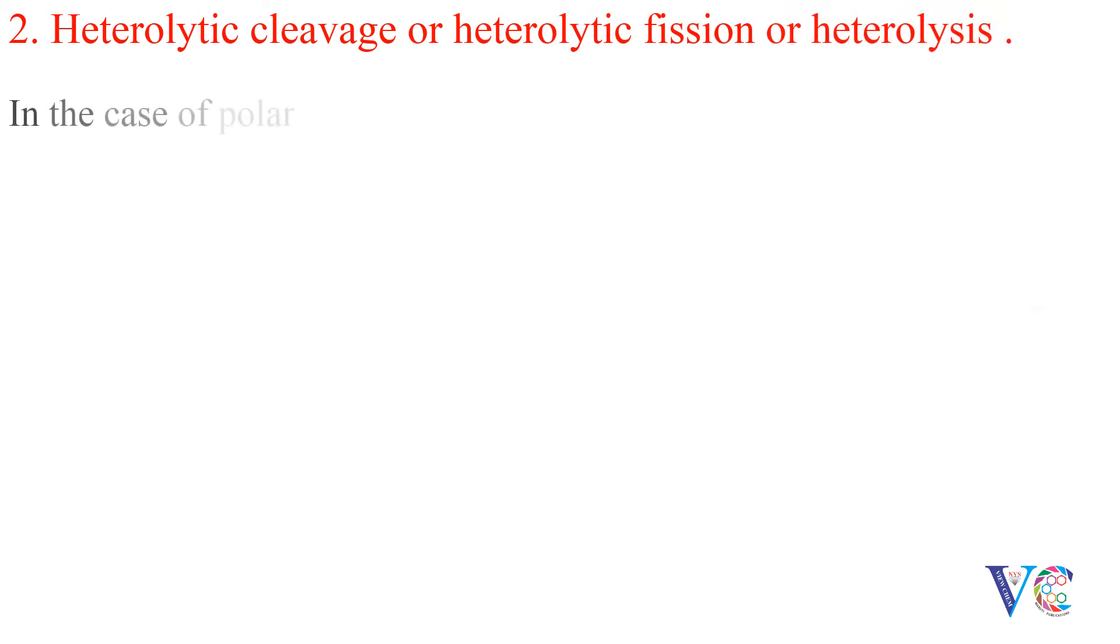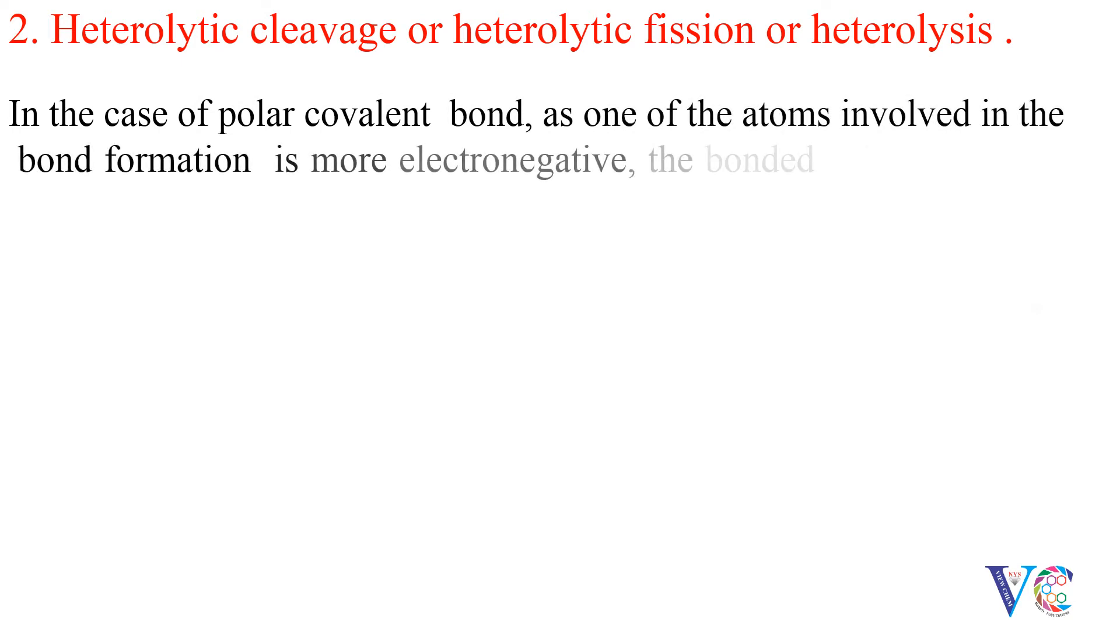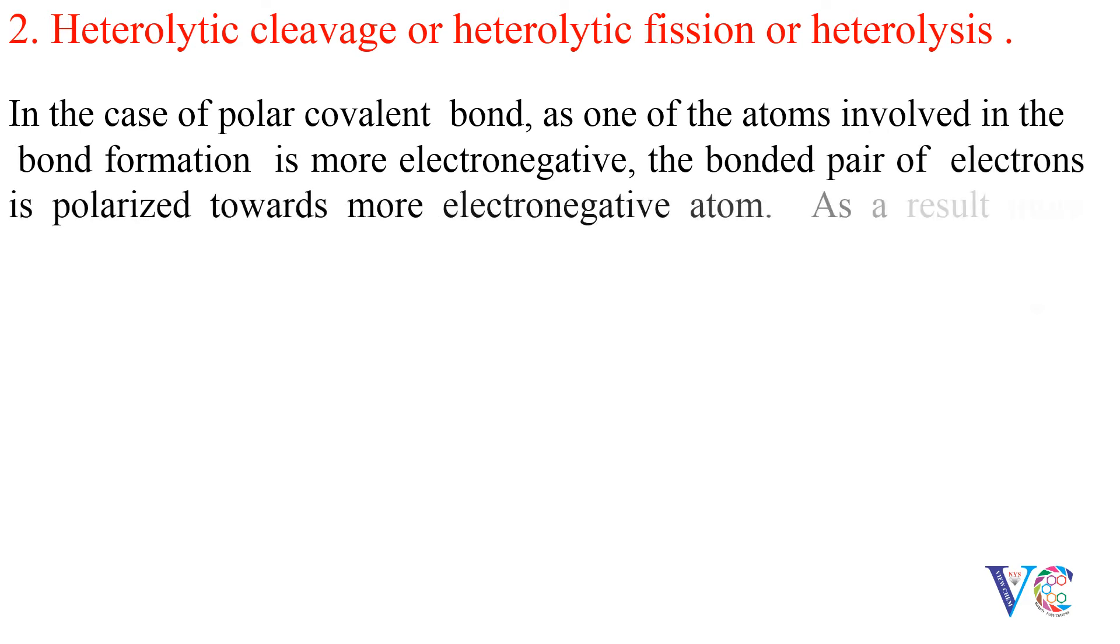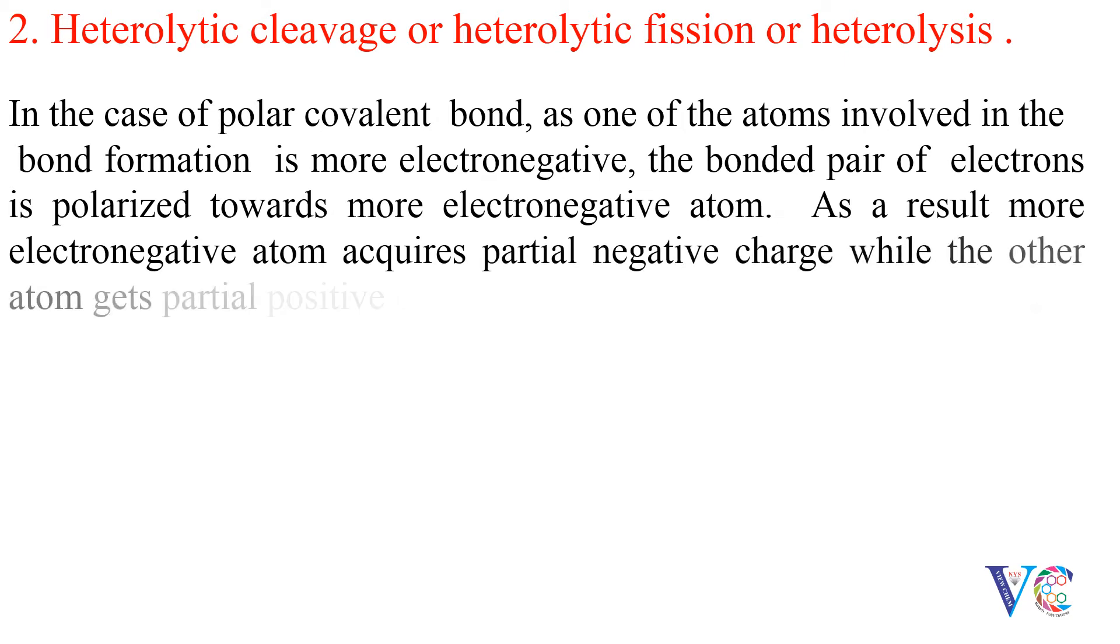In the case of polar covalent bond, as one of the atoms involved in the bond formation is more electronegative, the bonded pair of electrons is polarized towards the more electronegative atom. As a result, the more electronegative atom acquires partial negative charge, while the other atom gets partial positive charge.